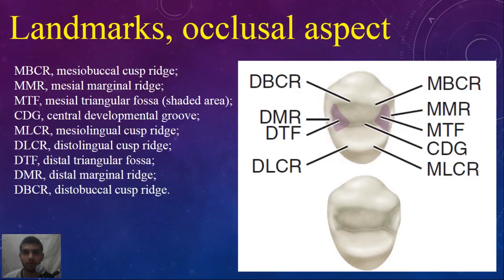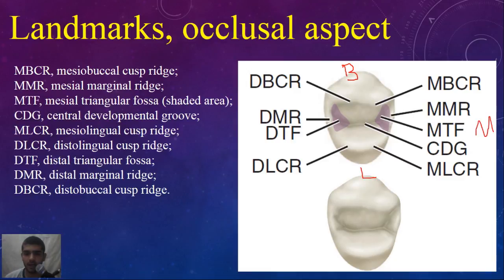Now from an occlusal aspect, we can see this is the occlusal aspect. We have, of course, the buccal side, the lingual side, mesial, and distal.